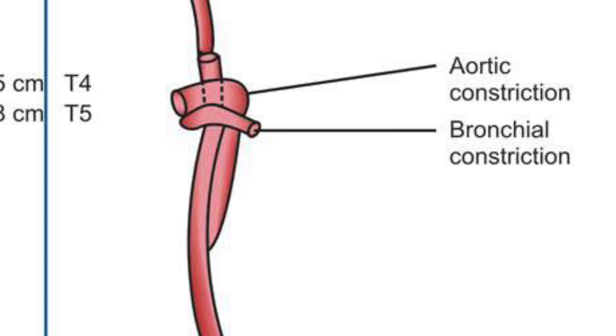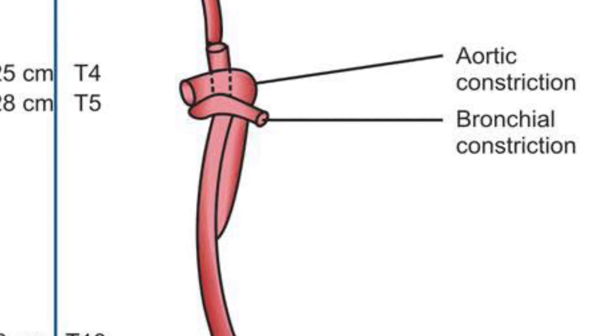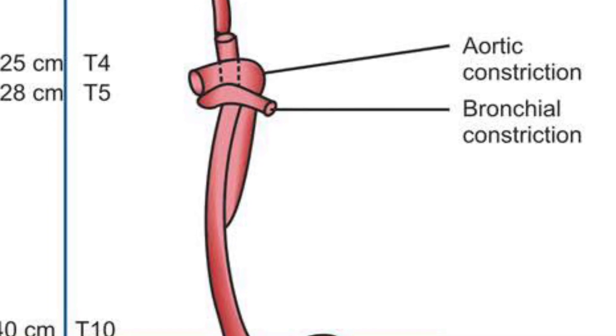The fourth constriction at the esophageal hiatus occurs at the level of the T10 vertebra.